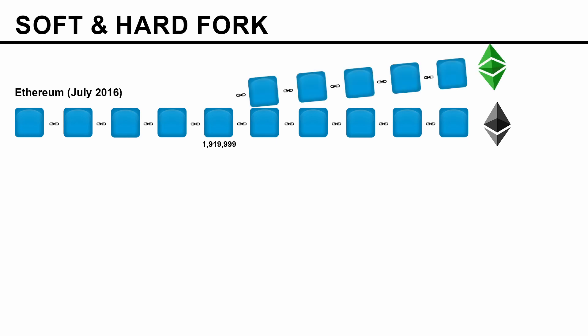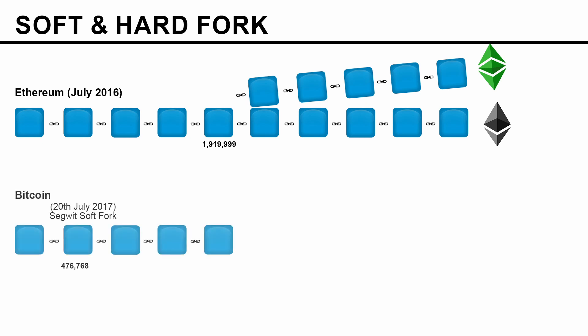That version is called Ethereum Classic. So we now have Ethereum and Ethereum Classic on the exchange, and the reason this happened was the DAO attack, which resulted in a hard fork and split the chain into two versions.